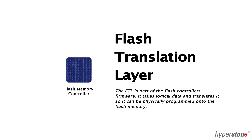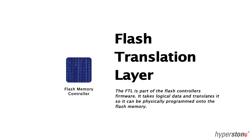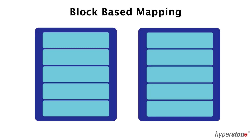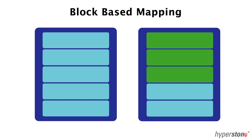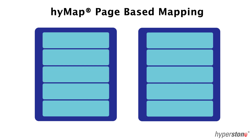Flash Translation Layers used to use block-based mapping — some still do — but the technology has since advanced to page and sub-page based mapping. In block-based mapping, data is written to one page at a time. If at any given point one page needs to be updated, that page and the pages before it must be copied and rewritten to another block, leaving the older pages marked to be deleted.